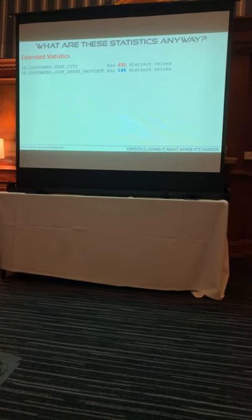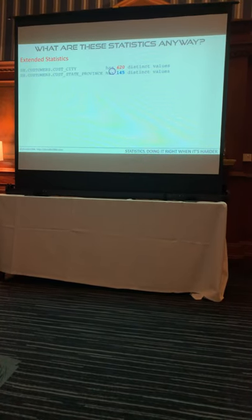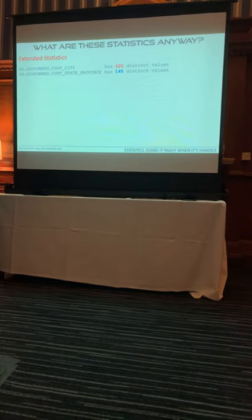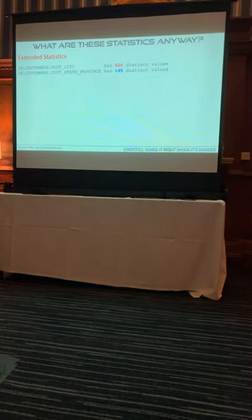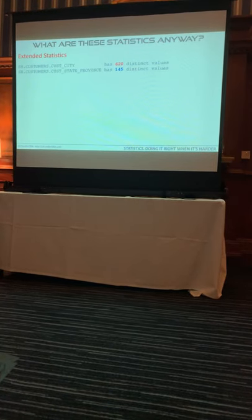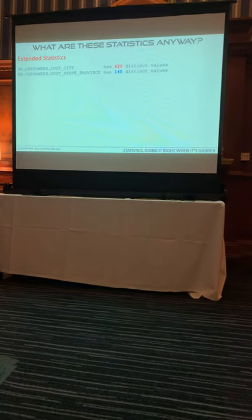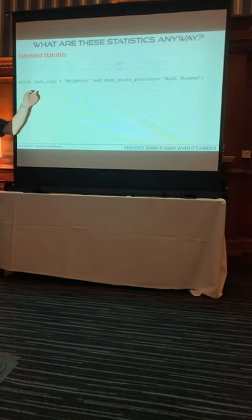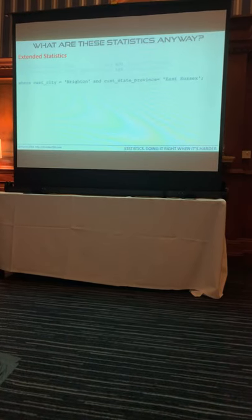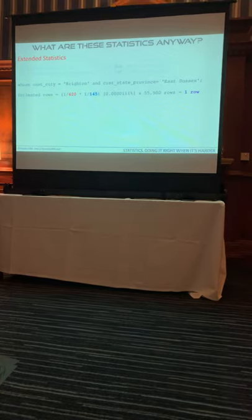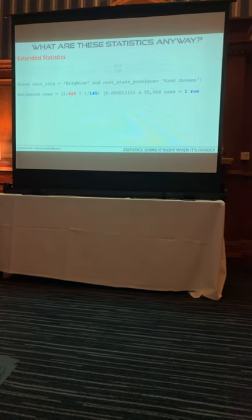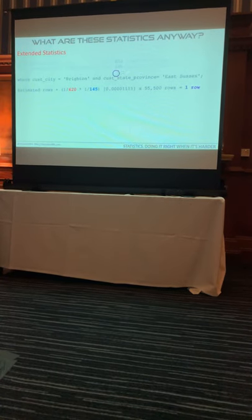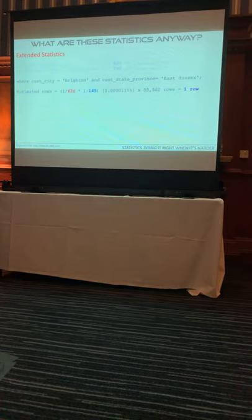What are extended stats? Extended stats show you correlation. If we've got a standard sales table with a customer city and a province, we know that cities tend not to move from province to province - they tend to stay in the same one. And therefore our data, city and province, is completely correlated. But if we run a query where the customer city is Brighton and the state province is East Sussex, we know Brighton is always in East Sussex. The optimiser doesn't know that - there are just two values to it. And so the number of rows the optimiser will estimate is 1 over 620, which is the number of distinct values in the city, and 1 over 145, the number of provinces. It multiplies to a very small value, multiplies by the number of rows in the table, and assumes you're going to get one row.